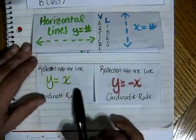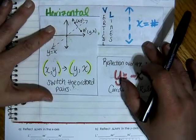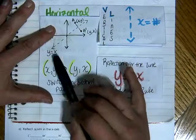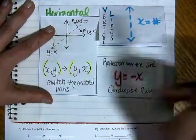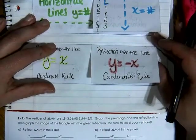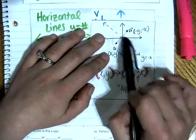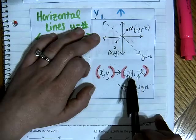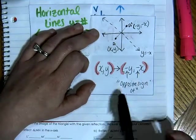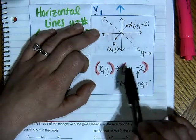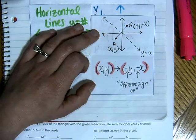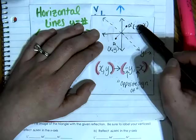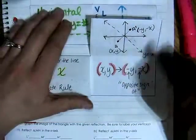When reflecting over a diagonal like y equals x, we have to use a rule. Our rule is that (x, y) changes into (y, x) for the positive diagonal line y equals x. We also have the reflection over y equals negative x, which has a slope of negative 1. Its rule is (x, y) changes into (negative y, negative x) — read as the opposite sign of y and the opposite sign of x. Note that you can't just count across a diagonal line to reflect; that is the main reason we use these rules.